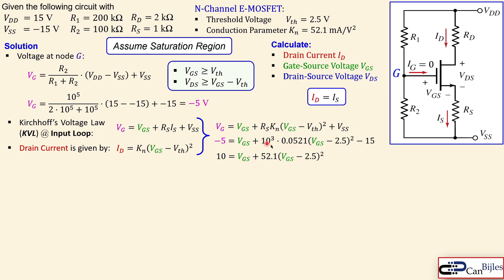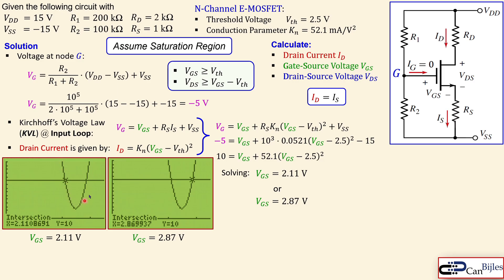Solving this quadratic equation — either step by step or using a solver — yields two solutions: vgs = 2.11 V and vgs = 2.87 V. Looking at the graph, these correspond to two intersections of the parabola (right-hand side) with the horizontal line at 10, giving y-values of 10 at approximately 2.11 V and 2.87 V.